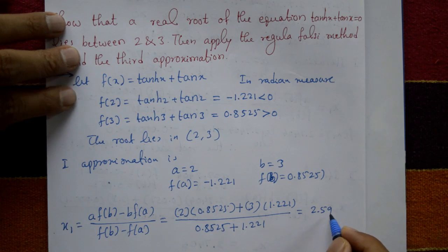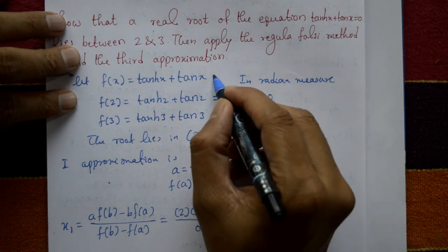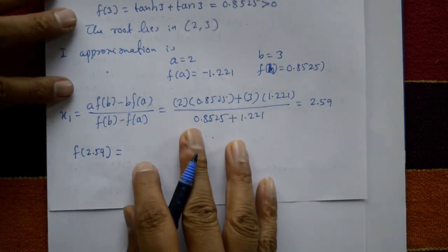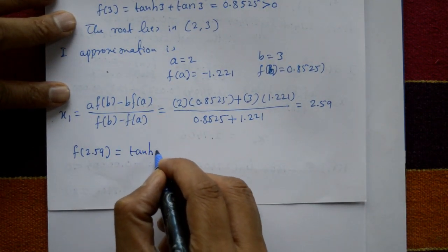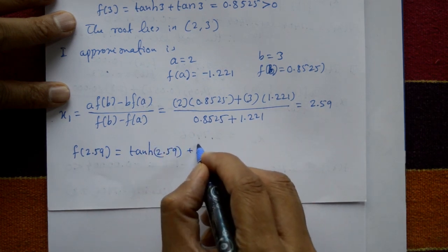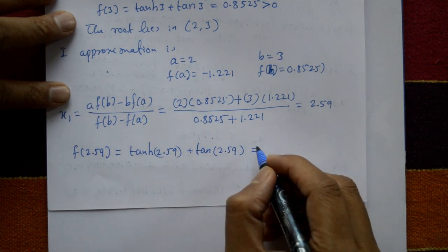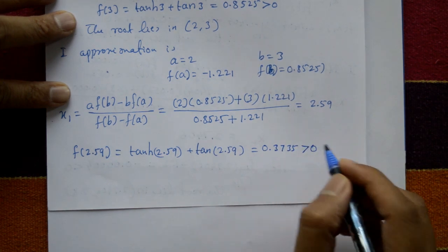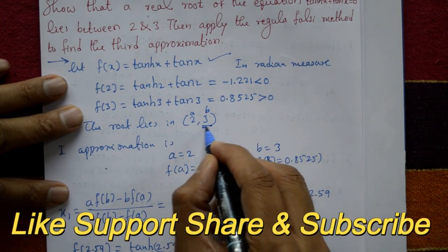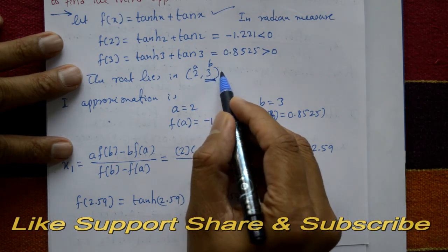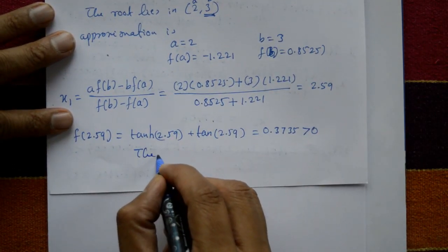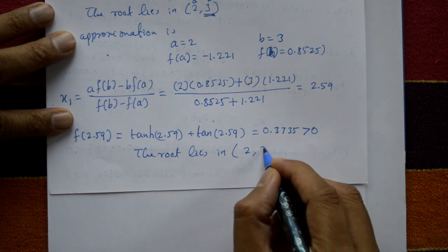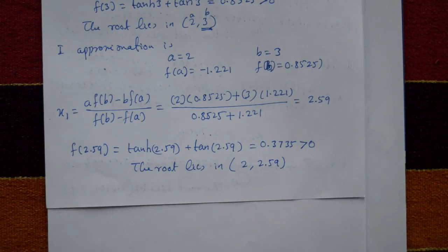x1 = 2.59. Now substitute back: f(2.59) = tanh(2.59) + tan(2.59) = 0.3735, which is greater than 0. Since f(a) < 0 and f(x1) > 0, we change the b value. The root now lies between a = 2 and b = 2.59.